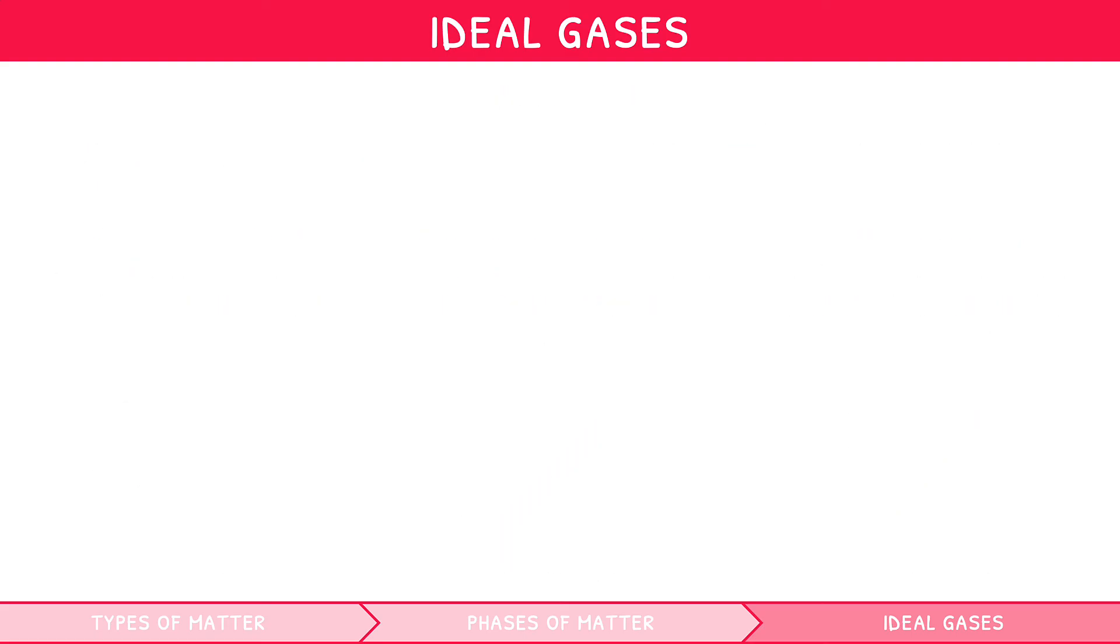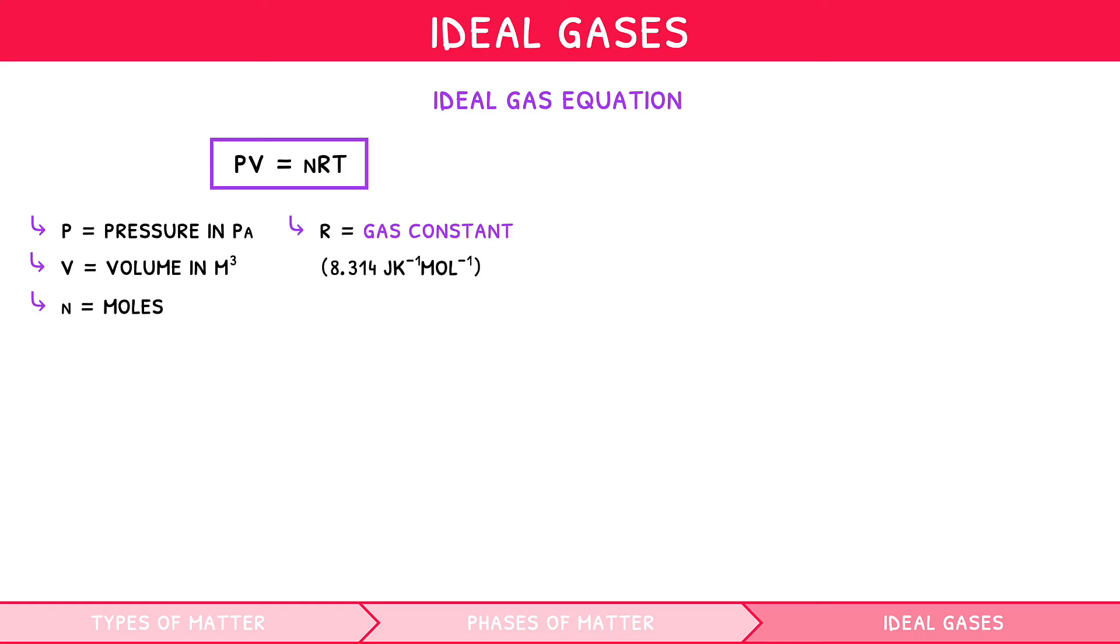From these relationships, there are two very useful formulae that can be created. These include PV equals nRT, wherein this formula, P stands for pressure in Pascals, V stands for volume in meters cubed, N stands for moles, R stands for the gas constant of 8.31, and T stands for temperature in Kelvin.